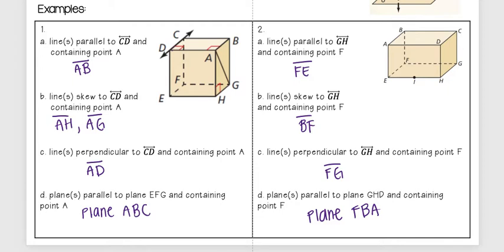Okay, so these are the answers that you should have gotten for number two. So line parallel to GH containing point F, here's GH, and so the only one that would work is going to be FE.